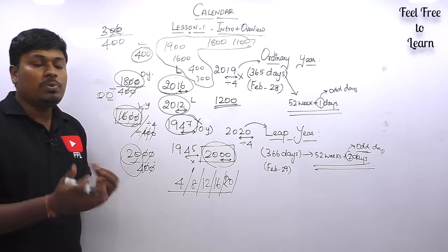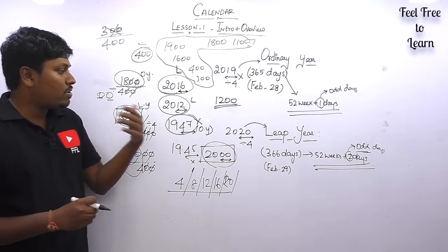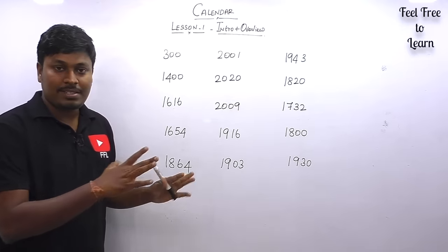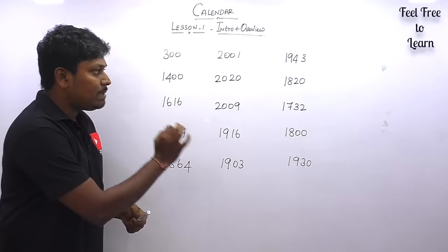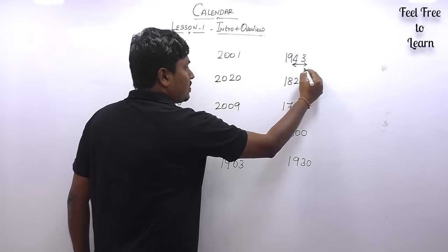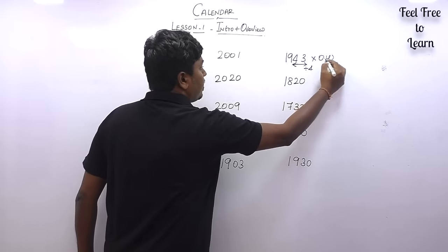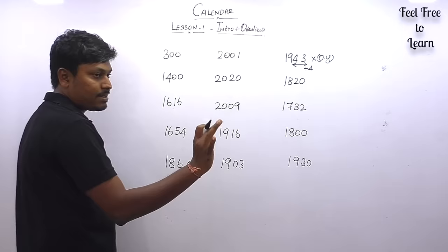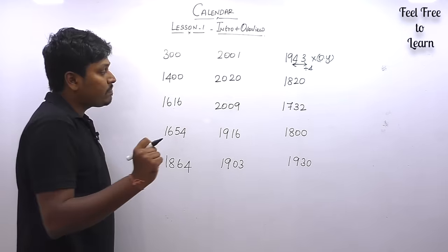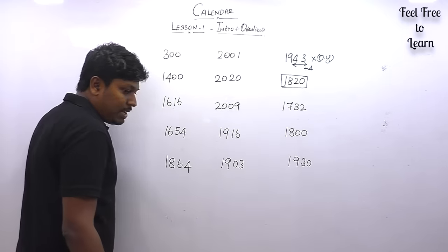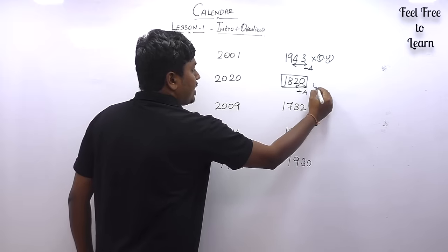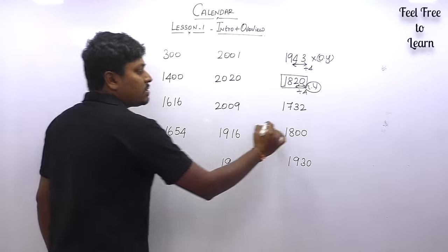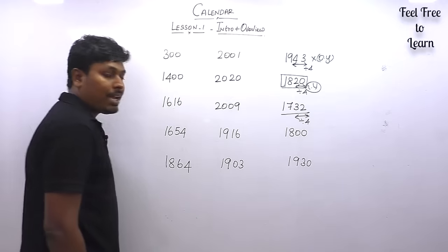Let's work through more examples. For 1943: last two digits are 43, not divisible by 4 — ordinary year, 365 days, 52 weeks + 1 odd day, February has 28 days. For 1820: last two digits are 20, divisible by 4 — leap year, 366 days, 52 weeks + 2 odd days. For 1732: last two digits are 32, and 8 × 4 = 32, so divisible by 4 — leap year.